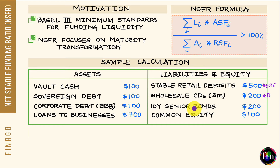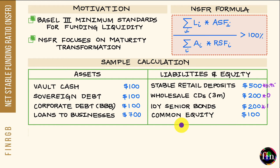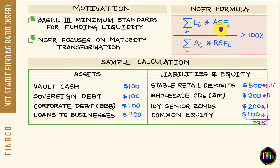Next, 10-year senior bonds with residual maturity greater than one year have an ASF of 100%, so 200 times 1. Common equity is very stable and also has an ASF of 100%, so 100 times 1. The weighted sum of all these entries comes out to be 775. This is the numerator — Available Stable Funding.